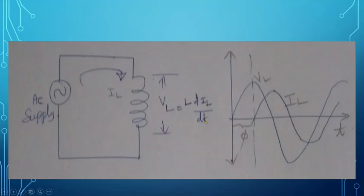dIL/dt is the rate of change of inductor current. So the voltage is always proportional to the rate of change of inductor current. If there is no change in the current flowing through the inductor, then there is no voltage either. The voltage across the inductor is proportional to changes in current only — if there is no change in current, there is no voltage across the inductor.